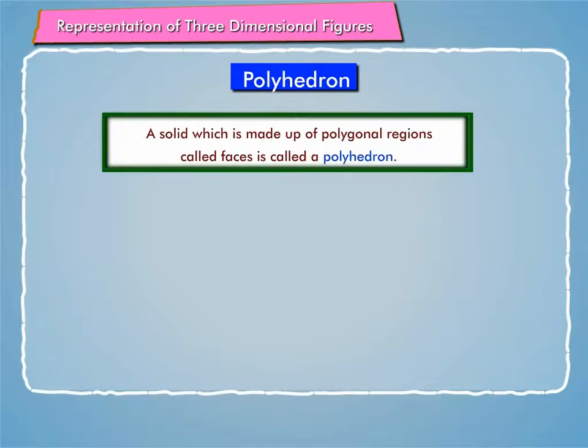There is a solid which is made up of polygonal regions called faces. That solid is called a polyhedron.